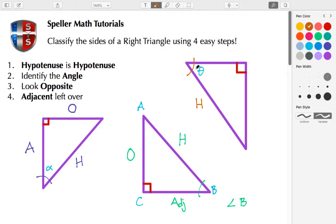For step three, we look opposite. This side here would be the opposite, we place it O. Then step four, adjacent is what's left over, so we place the A here. This is a short video showing how to classify the sides of a right triangle using four easy steps. If you like it, please like it, and as always, thank you for watching.